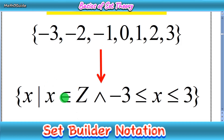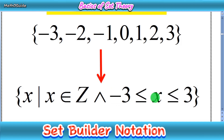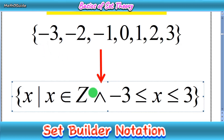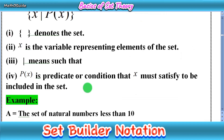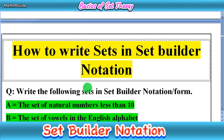We write X belongs to the name of the set. Here we have integers, so we write Z. After that we write the symbol of 'and', and at last we have a range — some limits: X is less than or equal to 3 and X is greater than or equal to minus 3. It means we write numbers between minus 3 and positive 3. This is the basic structure of set builder notation. Let's practice some questions today.